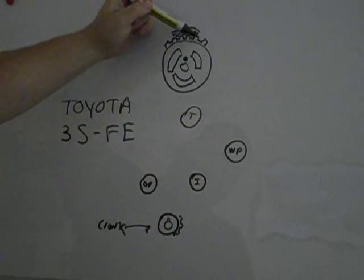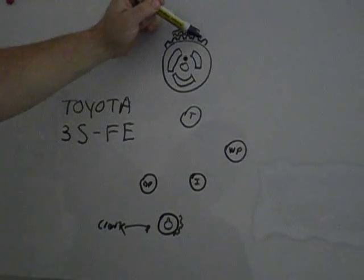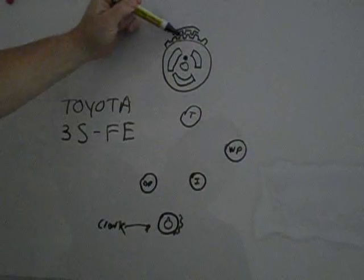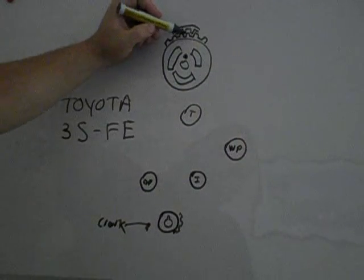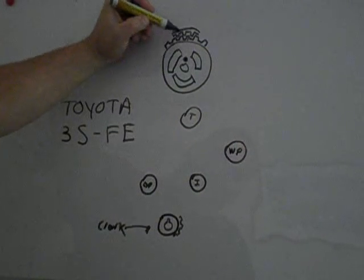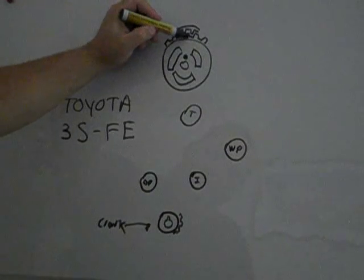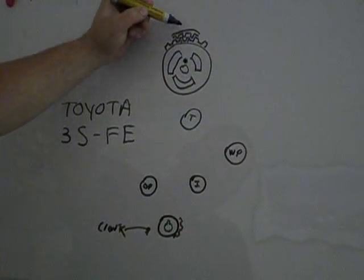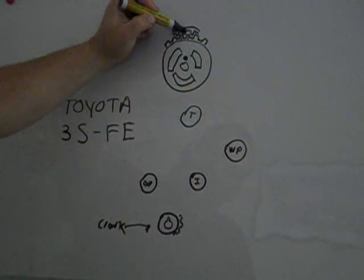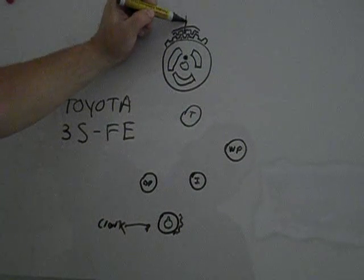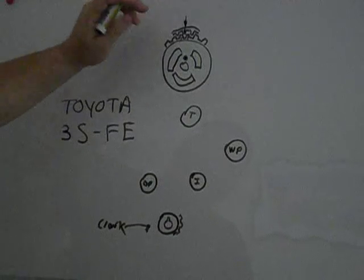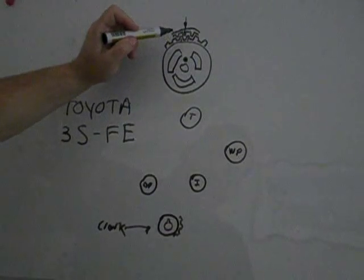on the cam pulley teeth, I mark two marks with a white out paint type, one that you paint on. Paint the whole tooth, and also the tooth that matches with that on the timing belt, paint that as well. So it's clear that those three points go together,